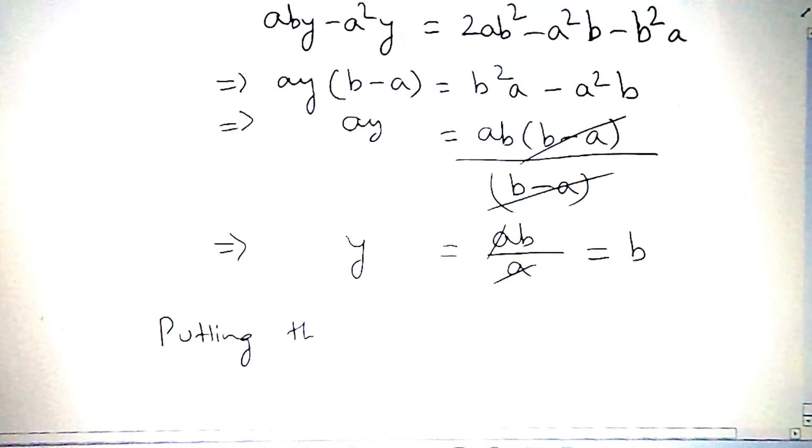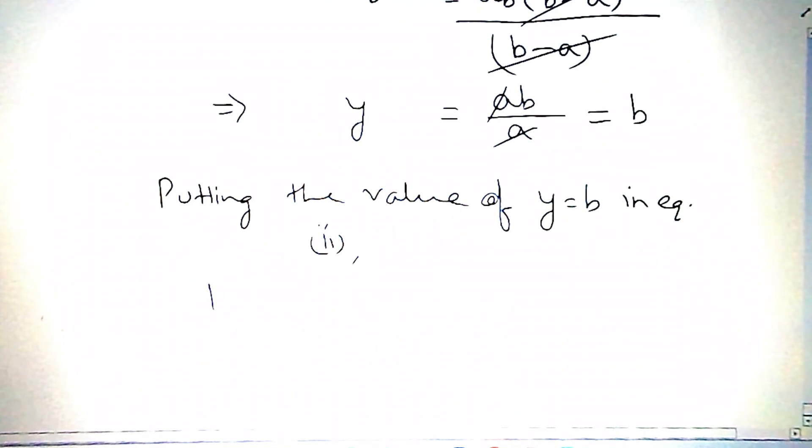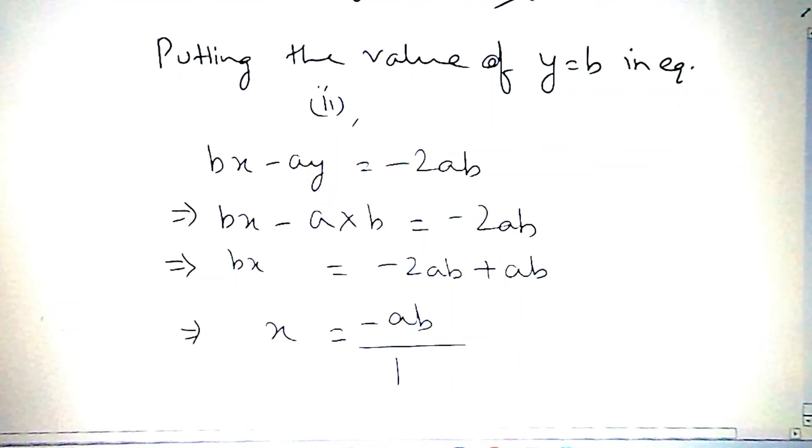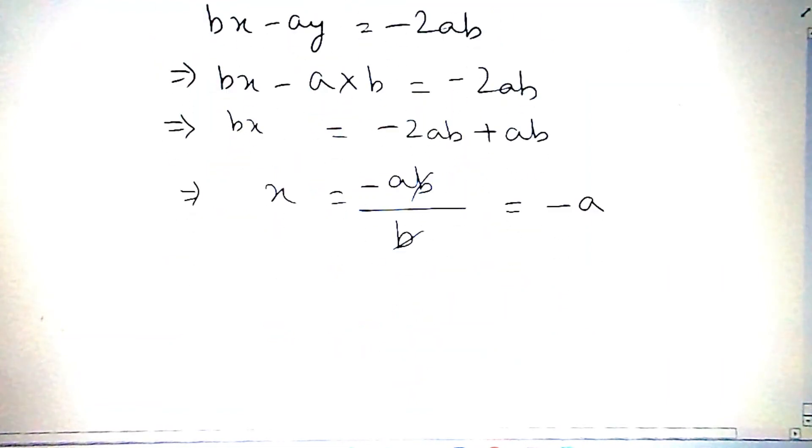Now, putting the value of y = b in equation 2, we get bx - ay = -2ab, that is bx - a × b = -2ab. So bx = -2ab + ab, therefore x = -ab/b, so x = -a. Thus x = -a and y = b.